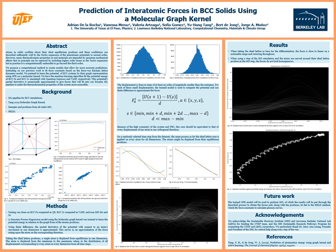We use a Gaussian process regressor to feed the molecular graph kernel and get the energies from the graphs. Then, using finite difference and displacing one atom at a time, we get the partial derivative of the potential, which equals the negative of the force, which is ultimately what we're looking for. When in the ideal positions, we truly only need to displace one atom in one of the orthogonal directions because of the high symmetry of the system and the periodic boundary conditions, which make it so that the results should be equivalent for any atom in any direction.